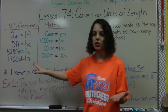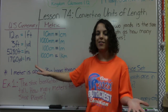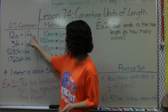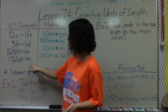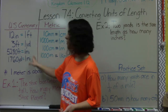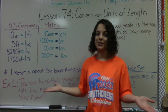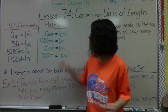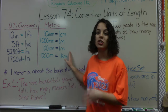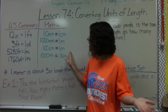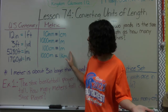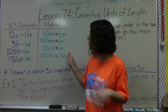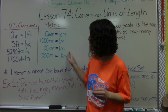We also have a metric system. This is the US customary system, meaning these are the measurements used just in the US — nobody else uses them. We have a metric system which the whole rest of the world uses, and it's pretty much easier because conversions are multiples of 10.